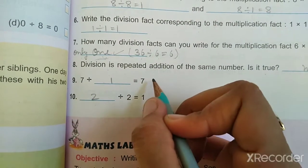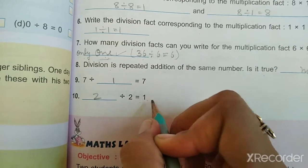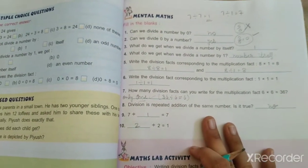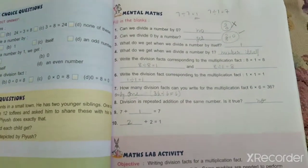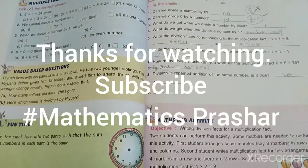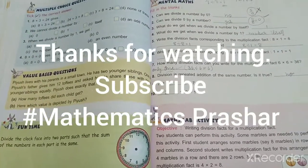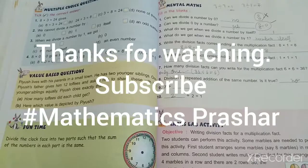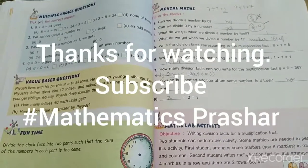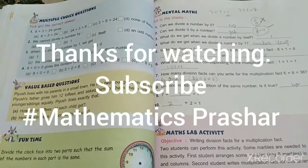So 7 divided by 1 will be 7 and 2 divided by 2 will be 1. Hence our mental maths of chapter number five is also done. In this video, we have discussed chapter number four and chapter number five's mental maths. If you want to see previous videos, you can subscribe to my channel Mathematics Prashar. In the next video, we will do mental maths of the next two chapters. Thank you so much everyone.